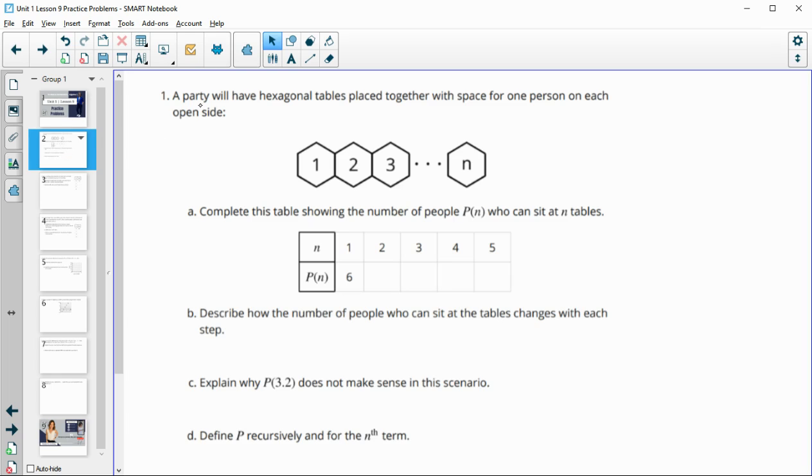So in number one, it says we have a party that will have hexagonal tables placed together with space for one person on each open side. Complete this table showing the number of people who can sit at N tables. So if we just have the one table, then this would be sitting by itself, right? And so we would have six spaces on either side for people to sit at.